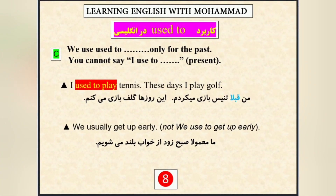این قسمت رو دقت کنید. Used to فقط برای گذشته است — only for the past. شما نمی‌تونید بگید I used to برای زمان حال. I used to play tennis یعنی من قبلاً تنیس بازی می‌کردم. These days I play golf — این روزا گلف بازی می‌کنم. We usually get up early — ما معمولاً صبح زود از خواب بلند میشیم. نباید بگیم We used to get up early — این اشتباه هست.